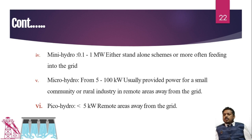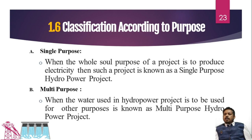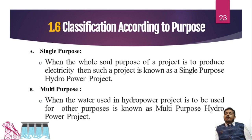Next is classification according to purpose. Basically, we install a power plant for electricity generation, so if our purpose is only that, we call it a single-purpose plant. In some cases, it is not just electricity but many other things are also connected with the installation of a power plant.